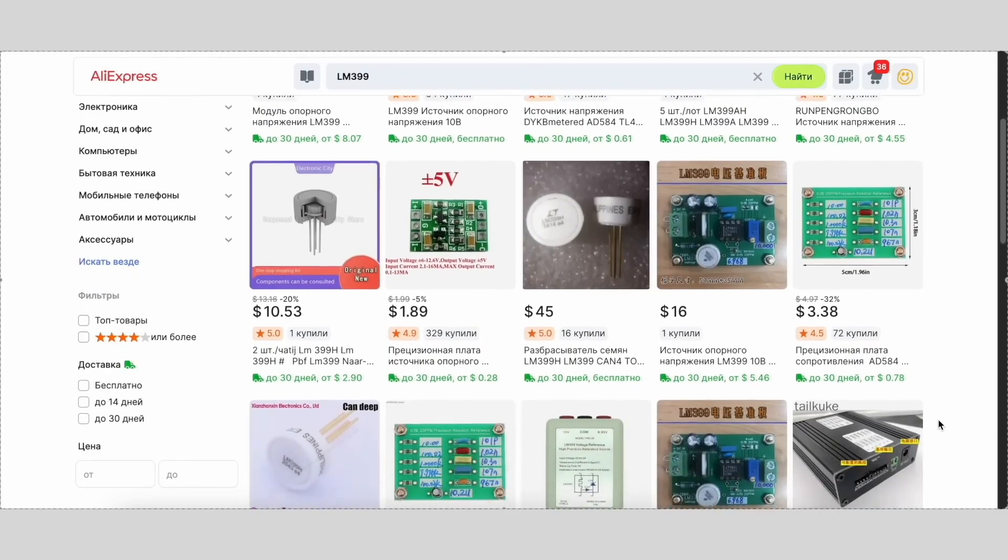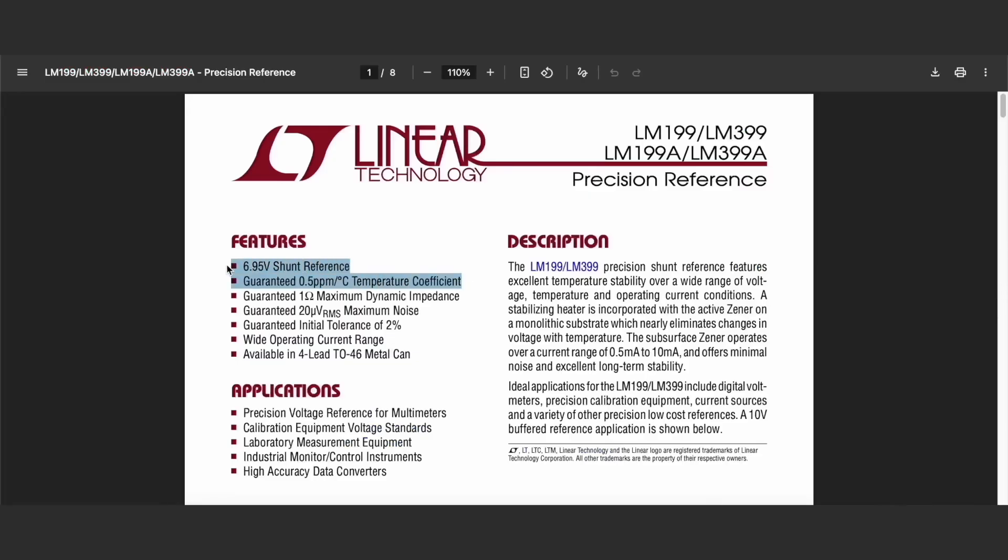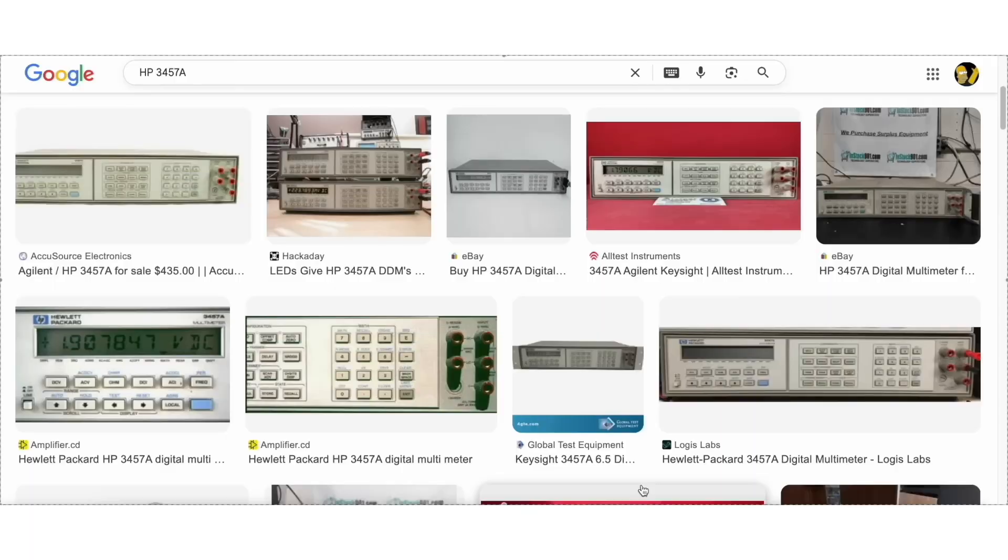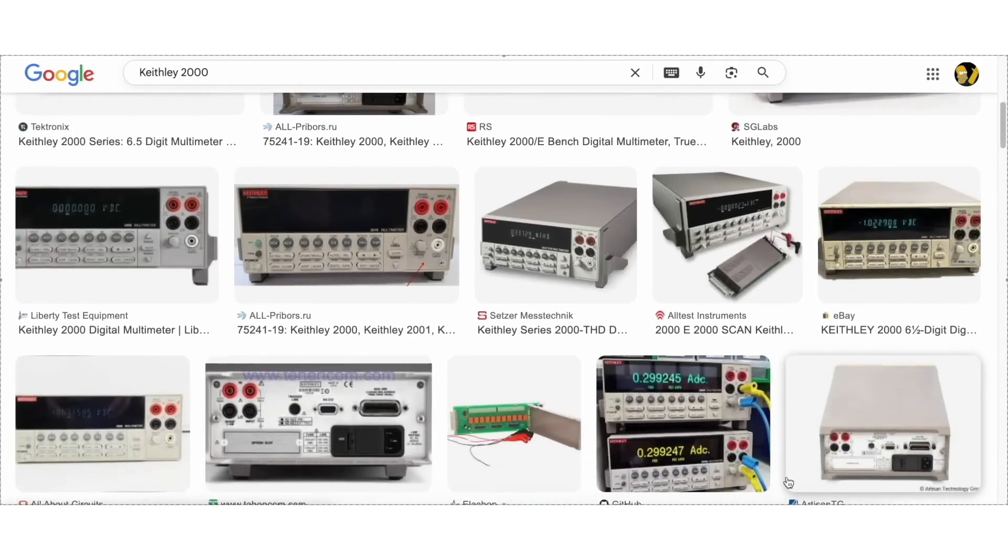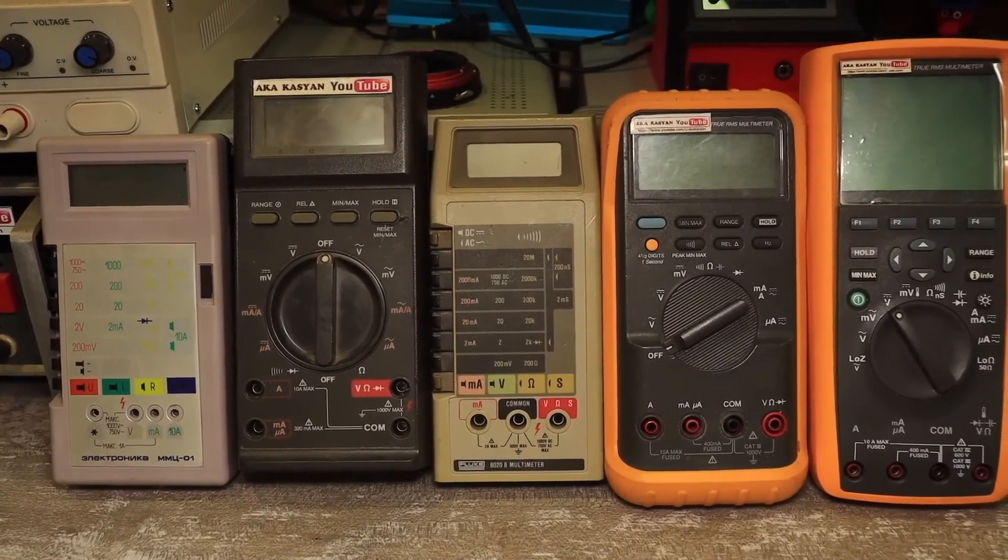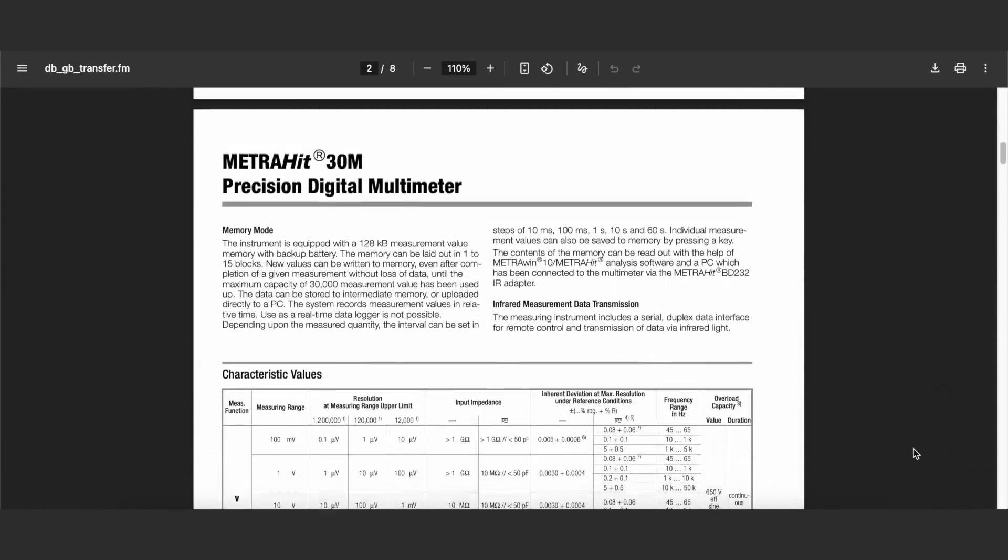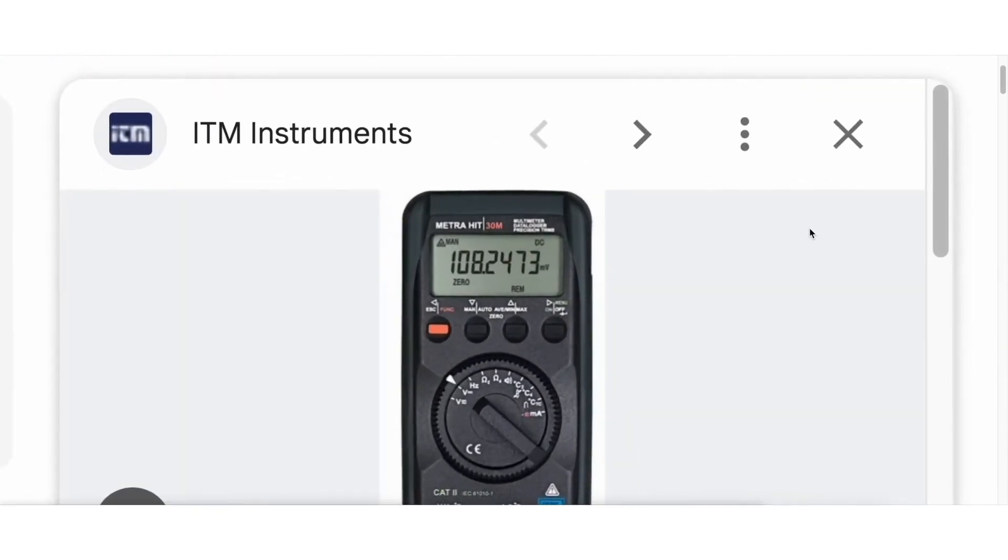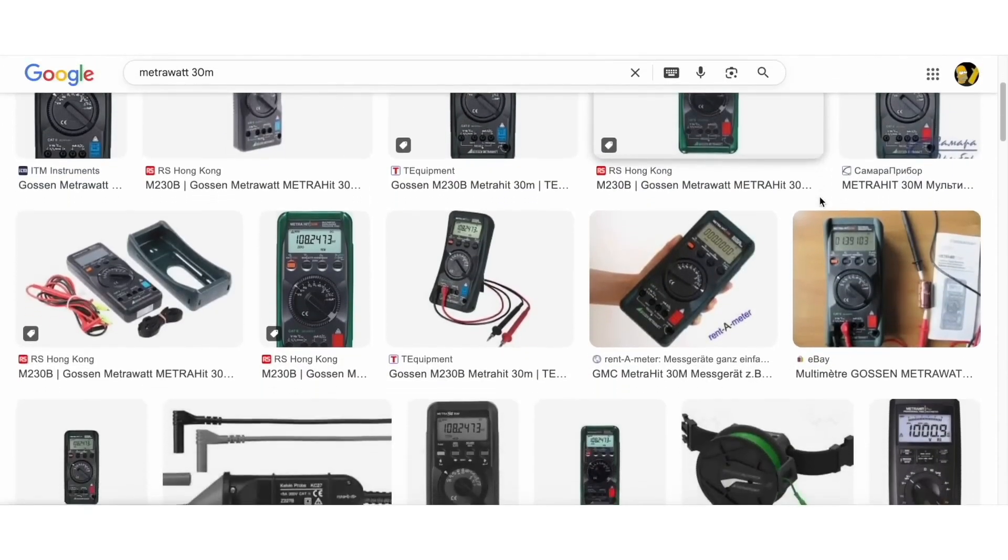But if you need something more serious, just go for a board with the LEM399 reference source. Granted, they're three to five times more expensive, but the LEM399 is much more stable and has very low noise. It's used in precision voltmeters with six and a half digits. Calibrated versions can reliably provide five decimal places. For portable multimeters, that's overkill. Unless, of course, you're the lucky owner of the king of all portable multimeters with six and a half digits, the Metroit 30M from Germany's Gassen Metroit. By the way, if you happen to have one lying around and for some reason want to sell it, I'd be more than happy to buy it.